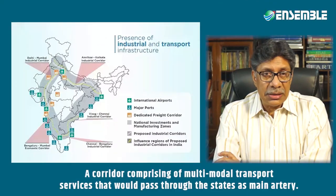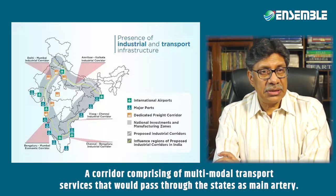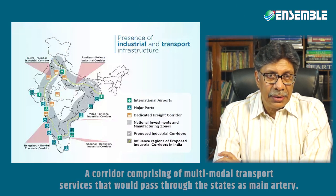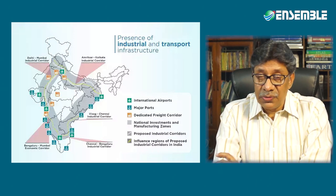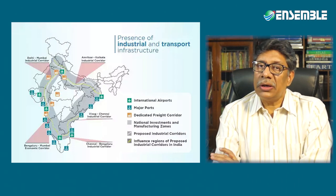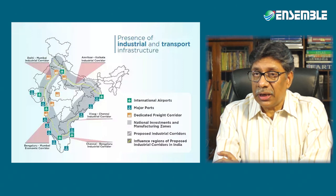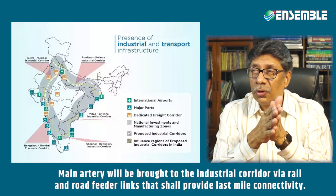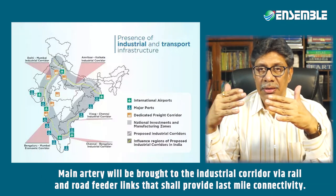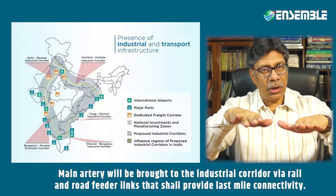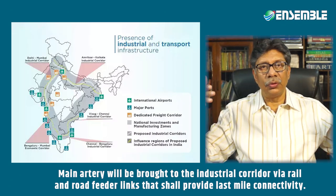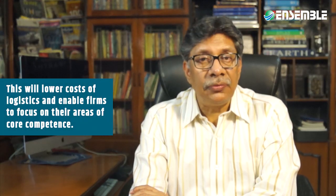An industrial corridor is basically a corridor comprising multi-modal transport services that pass through states as a main artery. Freight cargo from industrial zones — new industrial zones located up to a distance of 100 to 150 kilometers on both sides of the artery — will be brought within the corridor via rail and road feeder links that provide last-mile connectivity. This will lower the cost of logistics and enable firms to focus on their core competencies.